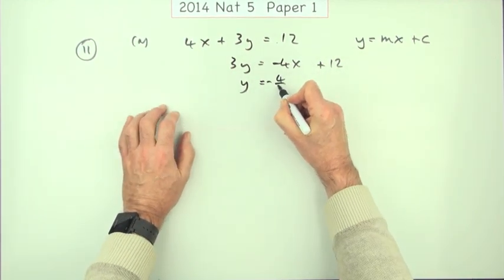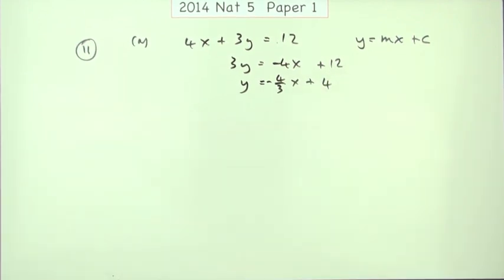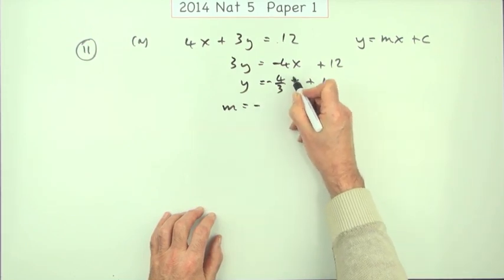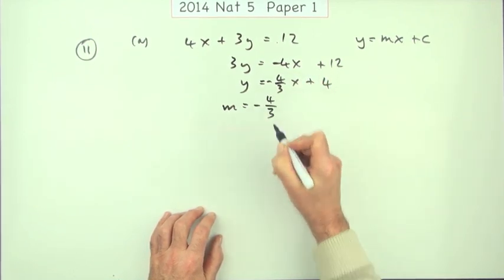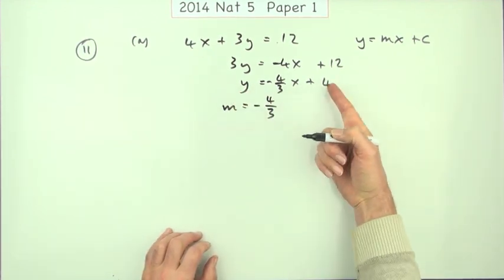So it'll be minus 4 upon 3x and 12 over 3 is 4 and then you can pick it out. Now I know that the gradient is the coefficient of x. What's multiplying it? Negative 4 upon 3.